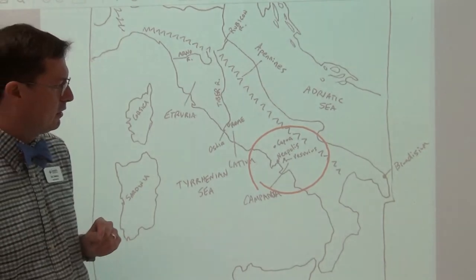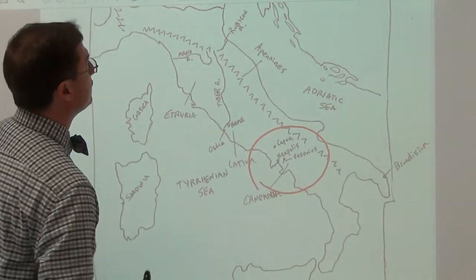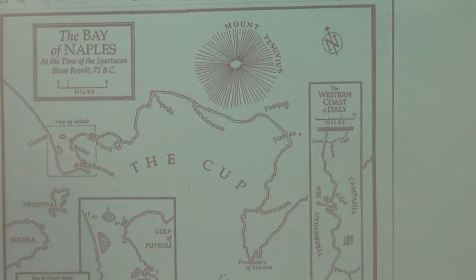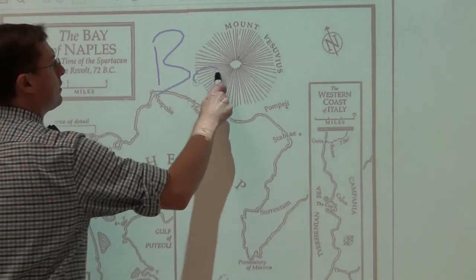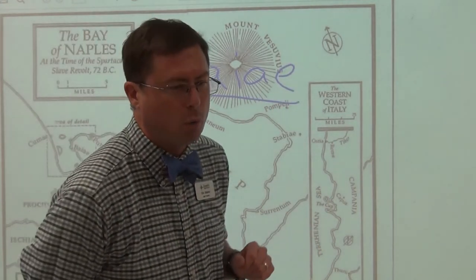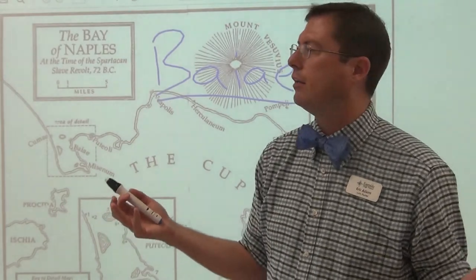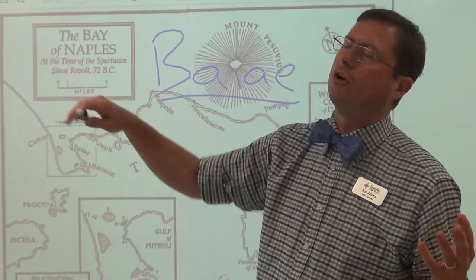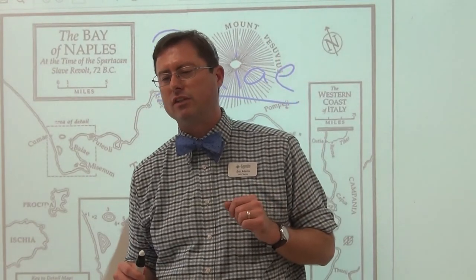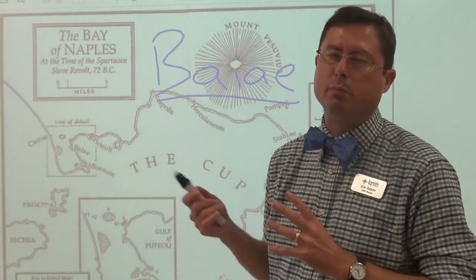On this Bay of Naples, the city where the Cornelians live is not Naples itself. Instead, they live at the resort town of Baiae — spelled B-A-I-A-E — an incredibly fashionable resort town. It would be kind of like having a fancy vacation house in the Hamptons, way out on Long Island near New York City, really one of the most expensive places to have a house in the world.